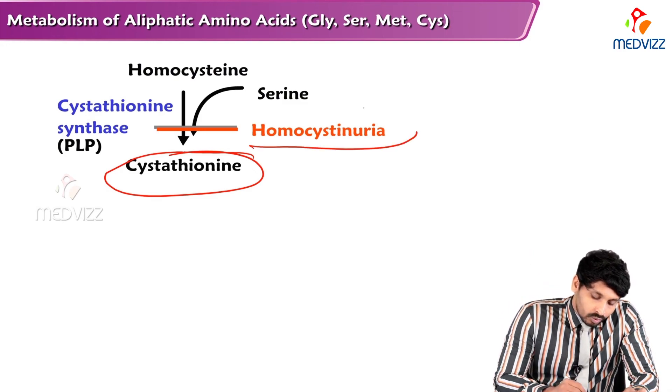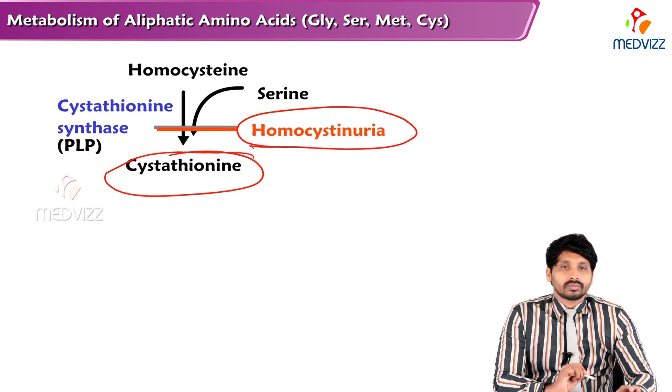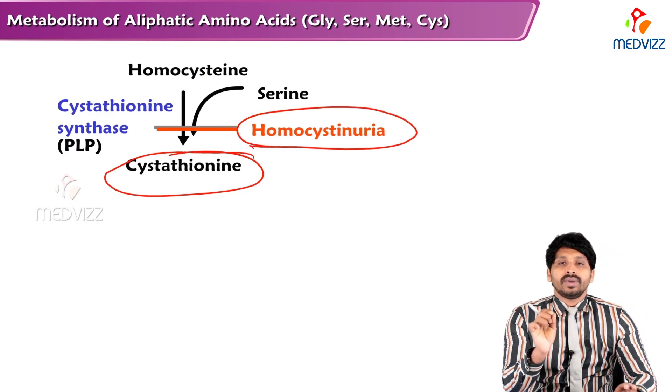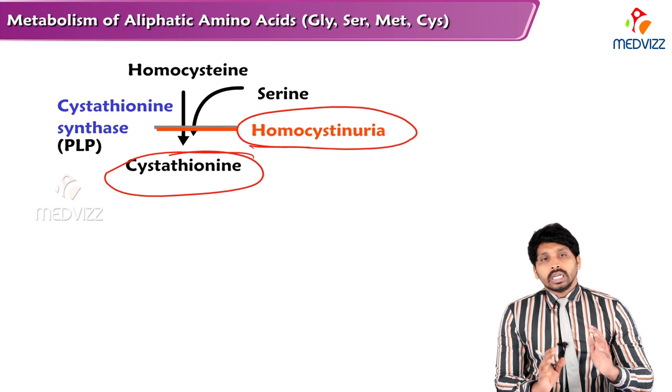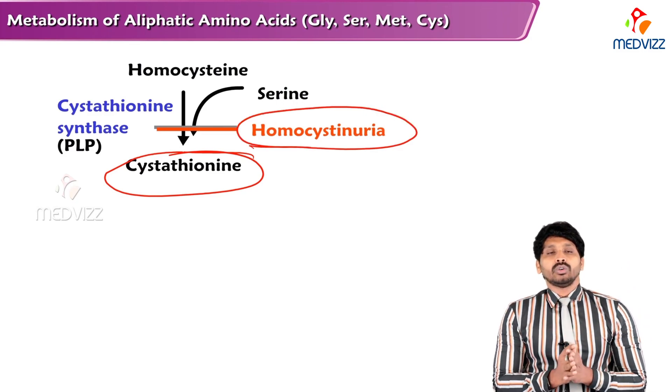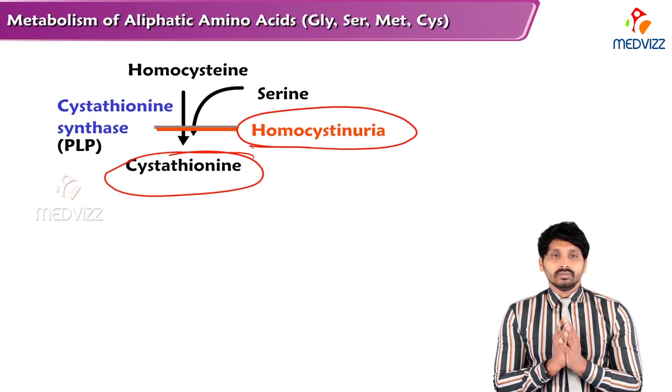Accumulation of homocysteine leads to the condition Homocystinuria, which is a defect of Methionine metabolism. That concludes Methionine metabolism. Thanks for watching.